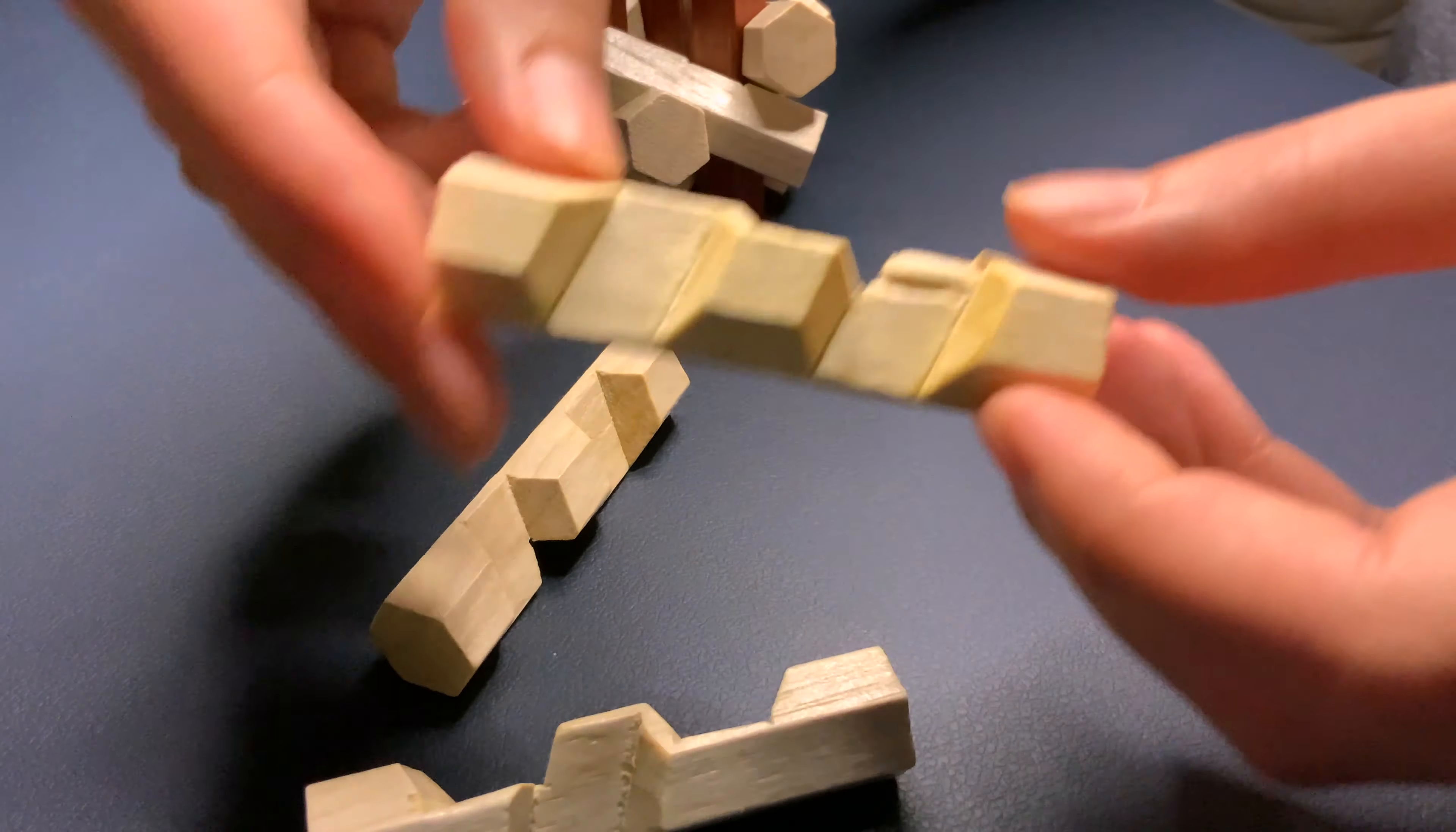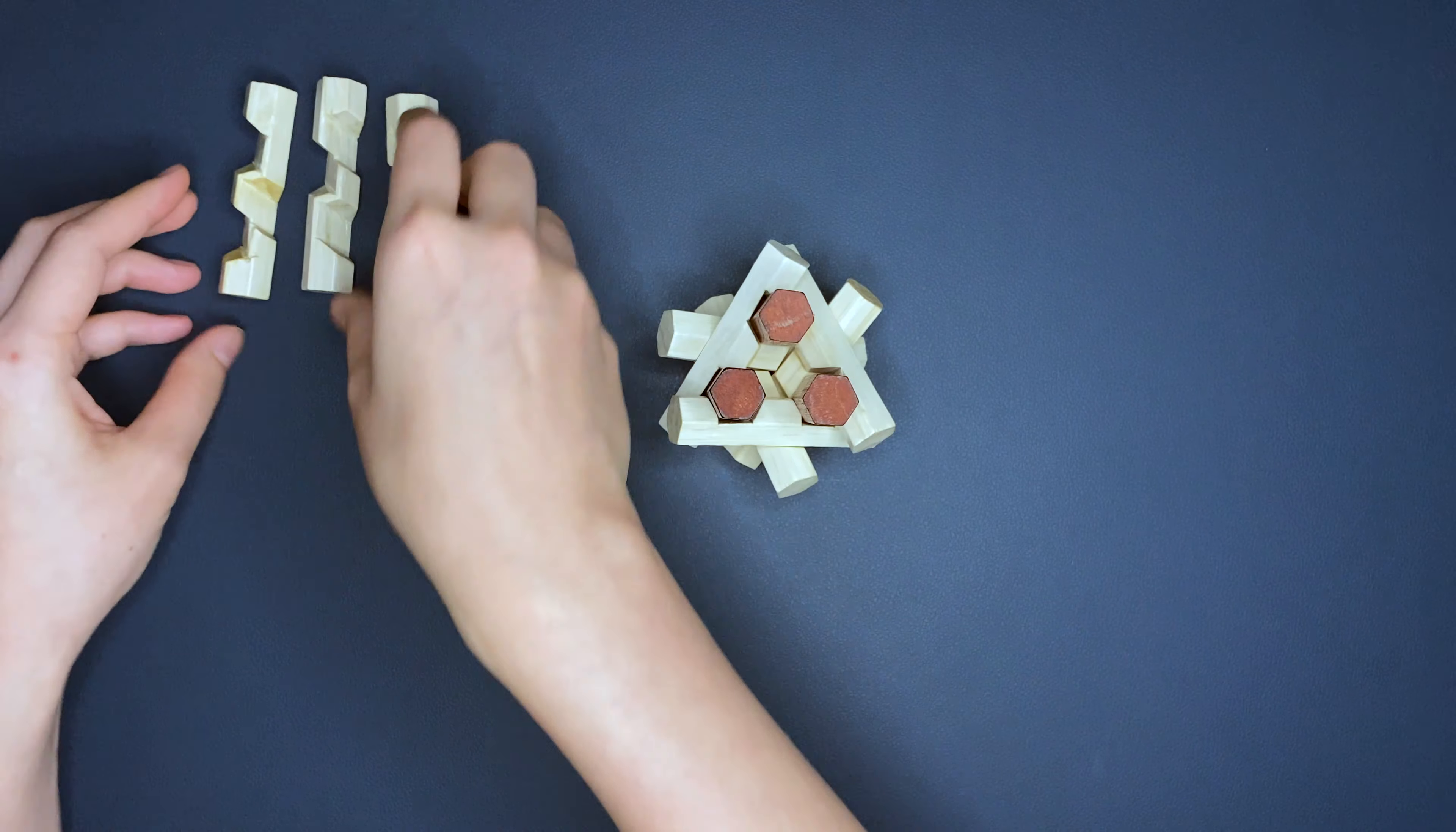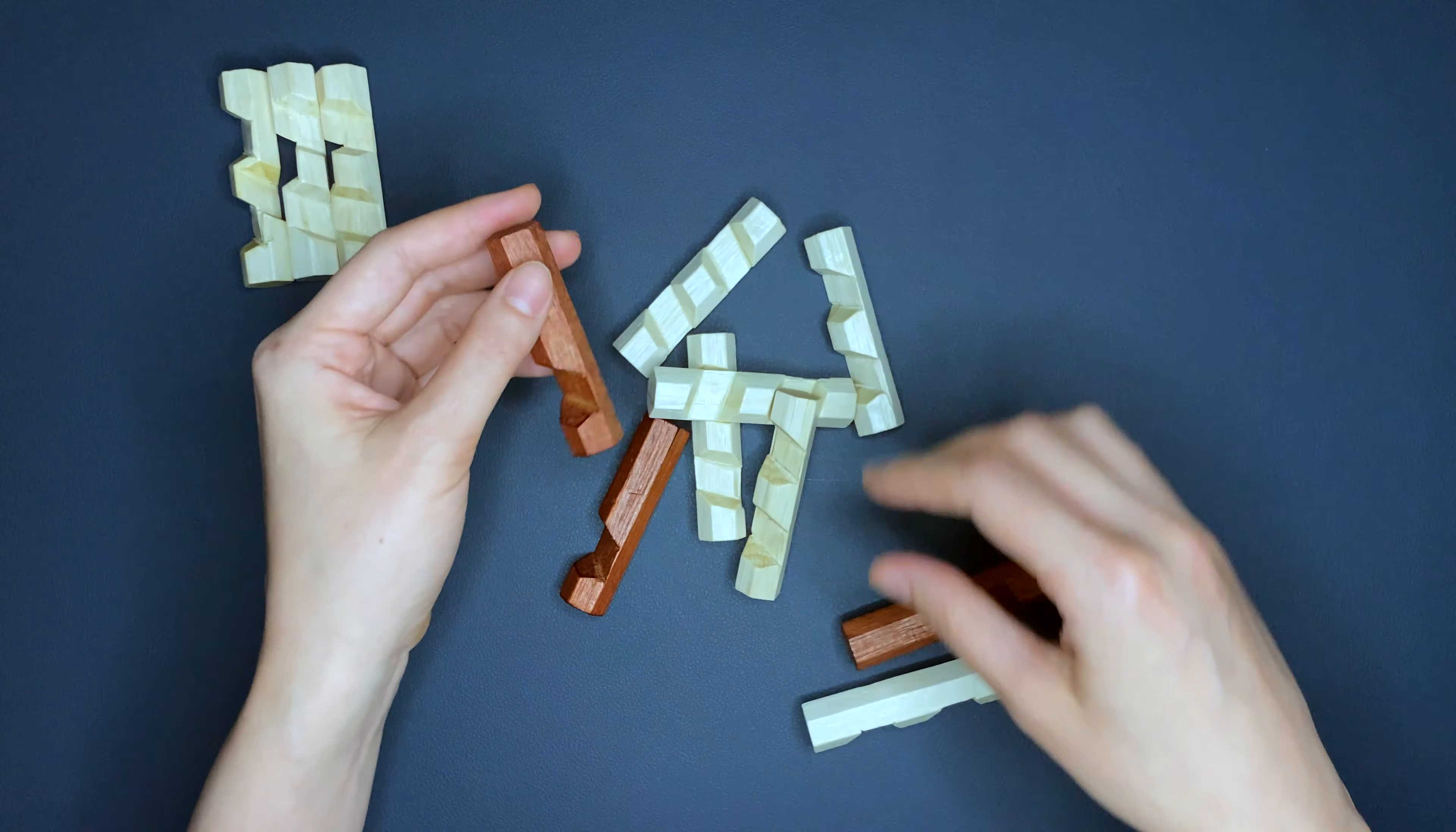And these top three pieces, they each have three carve outs. One here, one here, and one in the back. They are identical. Let's put them here. And the bottom actually naturally fall apart once you've taken out the top three pieces.